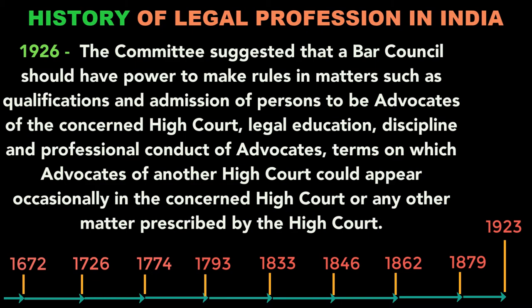The Chamier Committee suggested the establishment of a Bar Council for each of the High Courts. The Bar Council should have power to make rules in matters such as qualifications and admissions of persons to be advocates of the concerned High Court, legal education, discipline and professional conduct of advocates, and terms on which advocates of another High Court could appear occasionally in the concerned High Court.